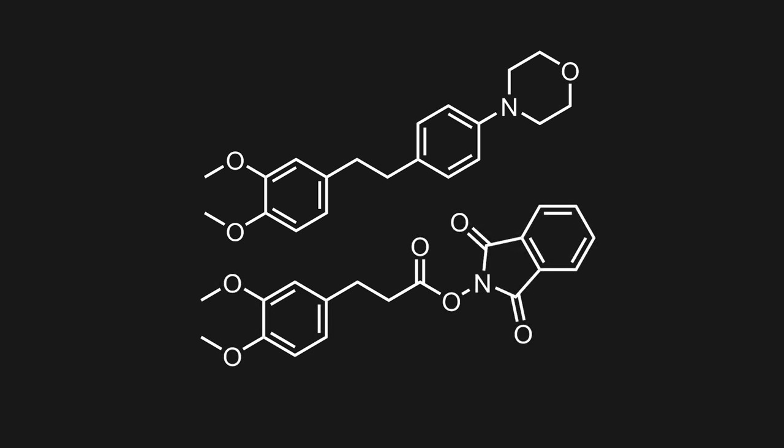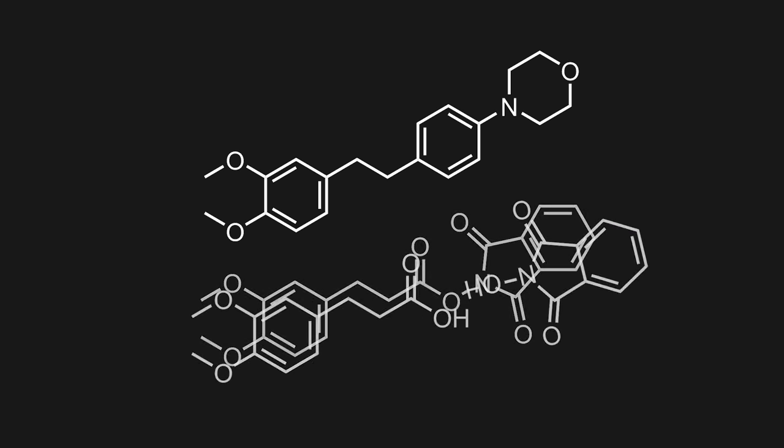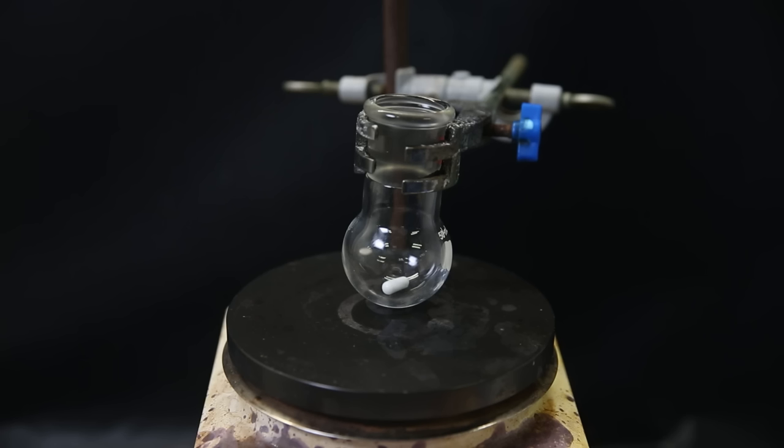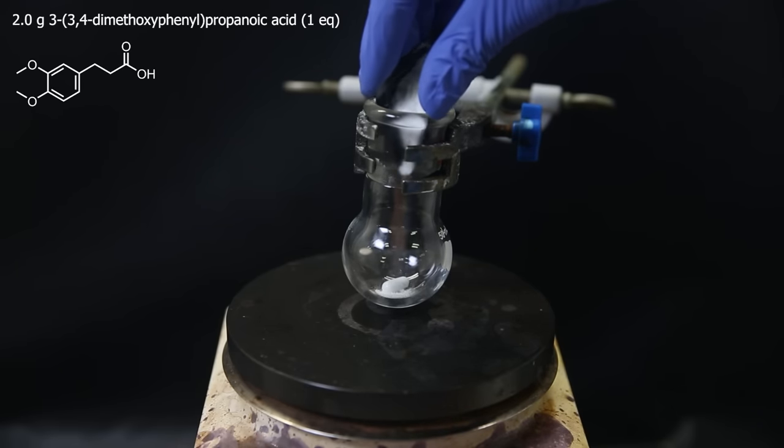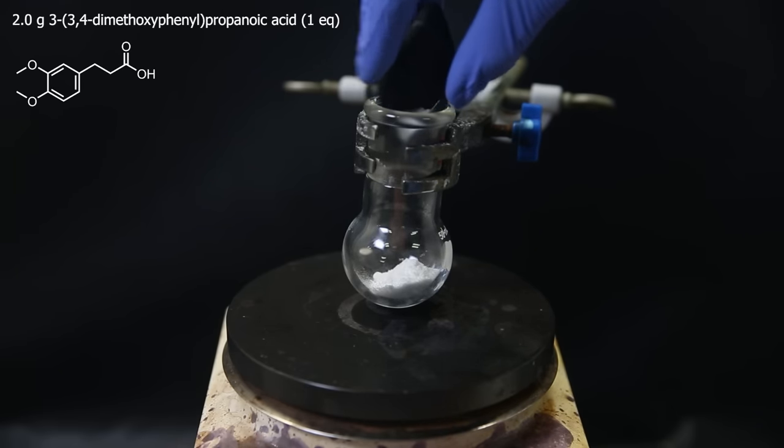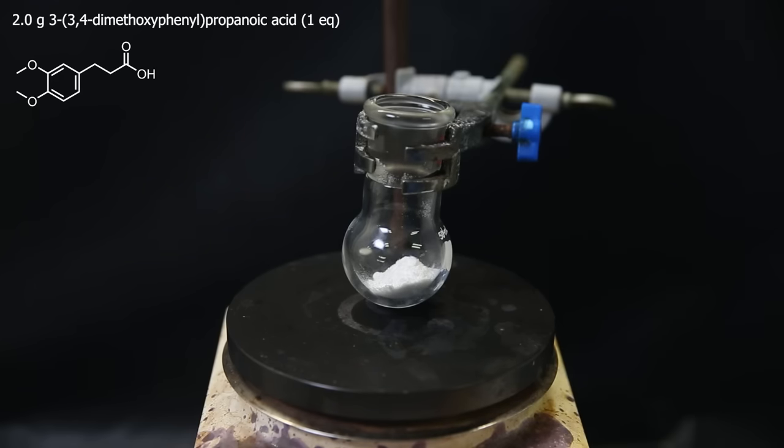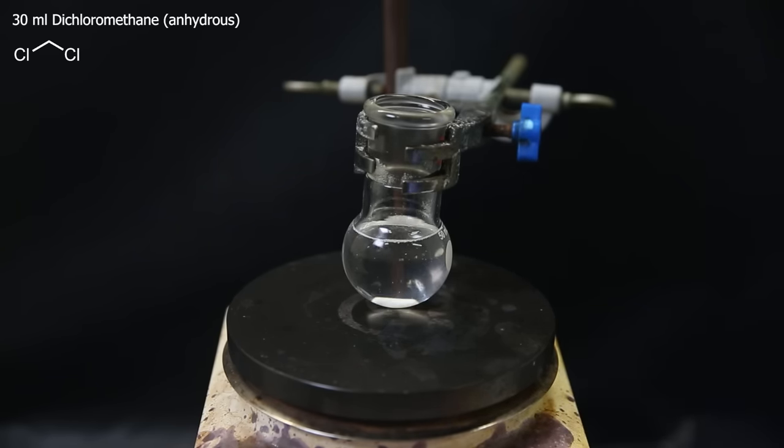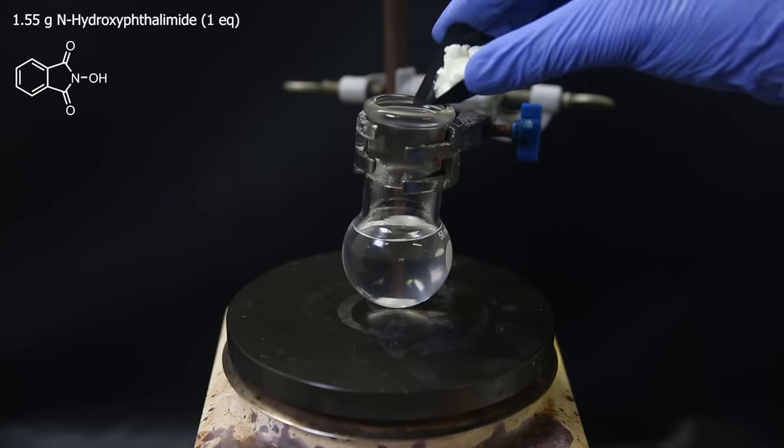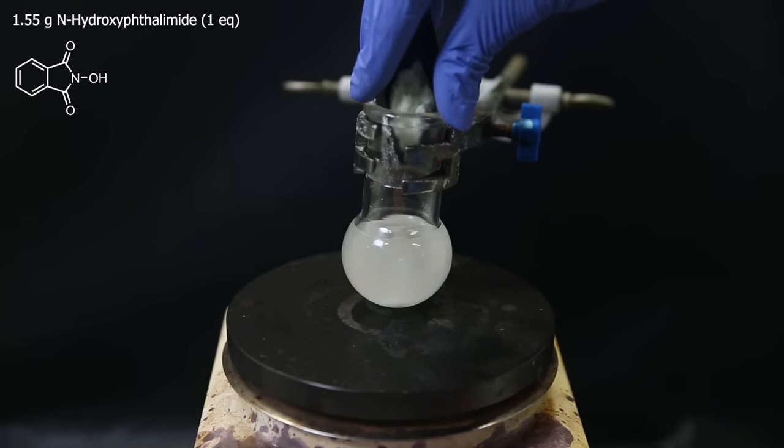And this something is a redox-active ester. Luckily, this is a fairly simple one-step procedure, which is done by esterification of the acid with N-hydroxyphthalimide. So for this, I will use the acid 3-(3,4-dimethoxyphenyl)propanoic acid. Of that, I add 2 grams to a small flask. I then dissolve it all into 30 ml of anhydrous dichloromethane. On top of that, I add 1.55 grams of N-hydroxyphthalimide.